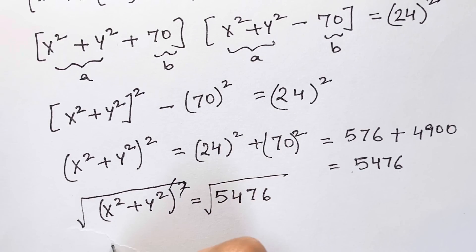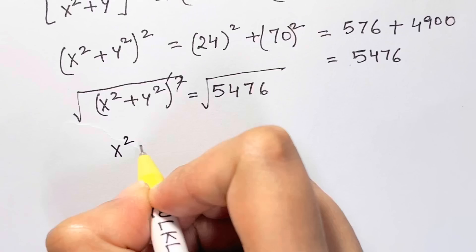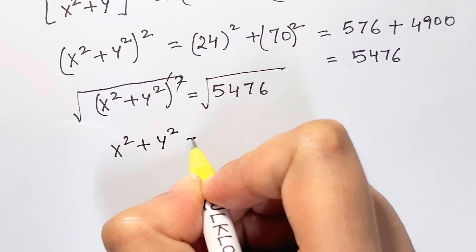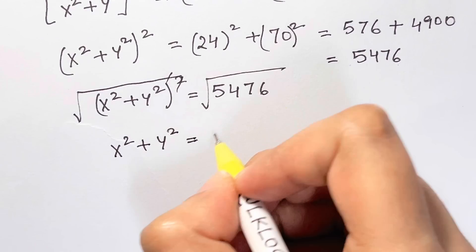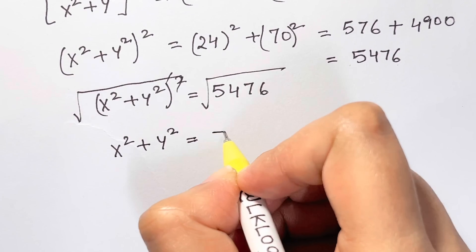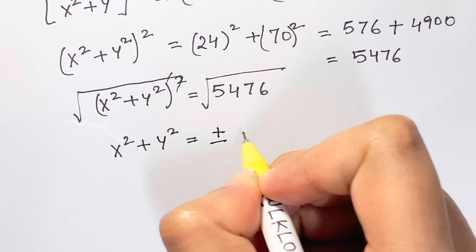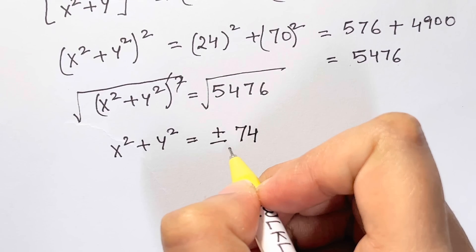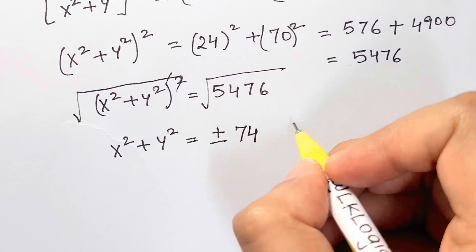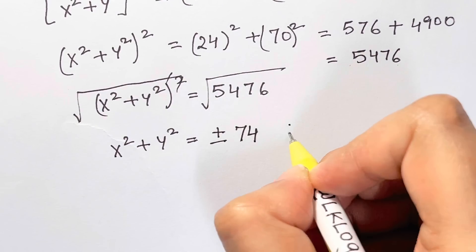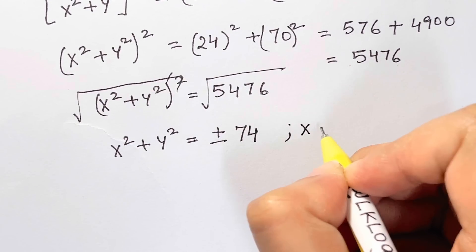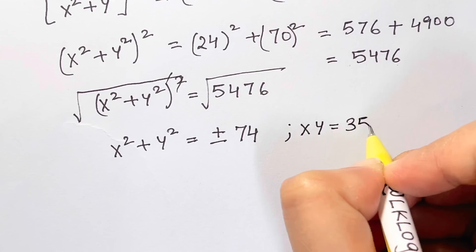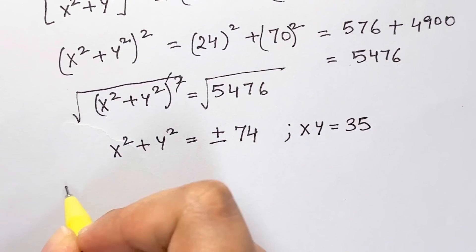Taking the square root on both sides to eliminate the square, I get x² + y² = ±√5476 = ±74. Now, since we know xy = 35, let me use the expansion of (x+y)².